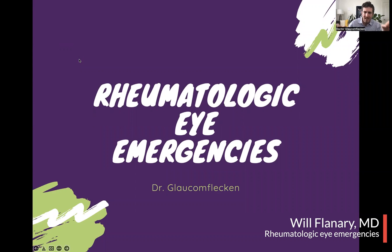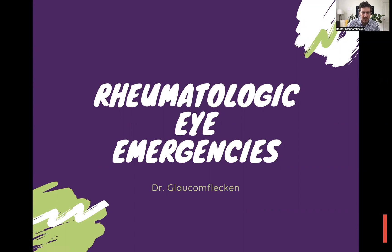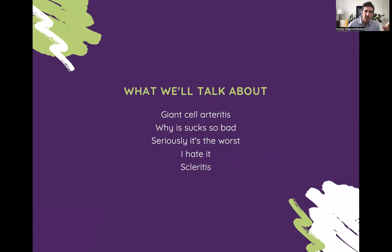We're going to talk about rheumatologic eye emergencies. Fortunately, there are really only two rheumatologic eye emergencies you need to have in the back of your mind. We're going to talk about giant cell arteritis — that's going to be about 95% of our discussion — it's a horrible disease. And then also scleritis at the end; I'll say a few words about scleritis.